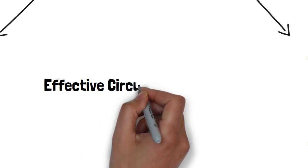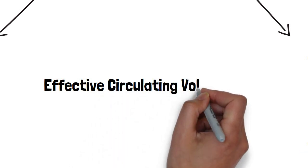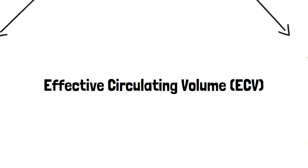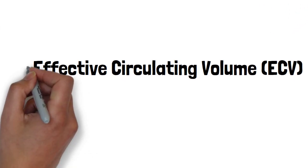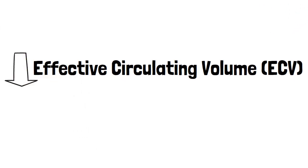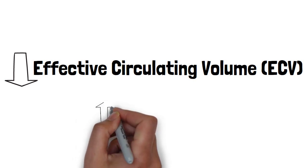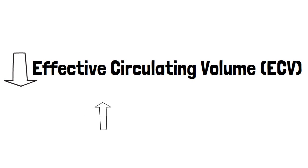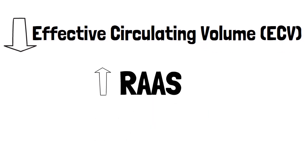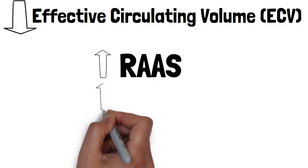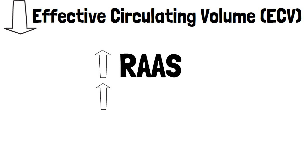In both of these instances, the effective circulating volume is the problem here. And in both cases, it's decreased. Now, in hypovolemia, it's simple to see why. In hypervolemia, it's because things have third spaced. In response to this, our body will do what it needs to do to restore volume. It'll kick on the RAS system, and it'll kick on the ADH system.